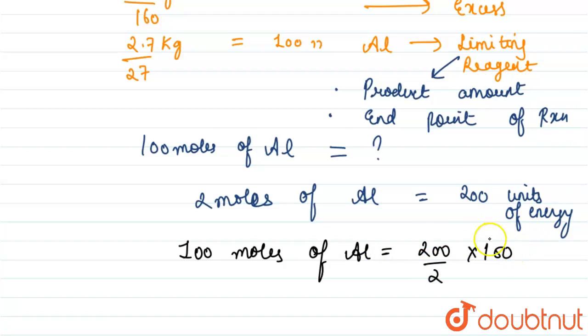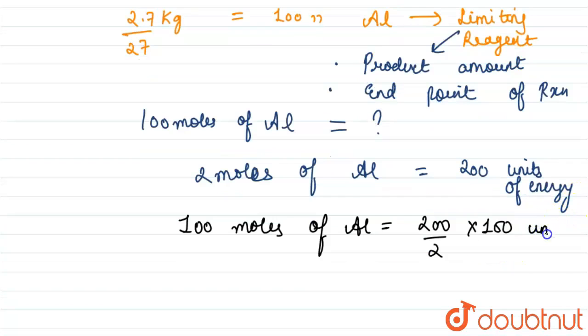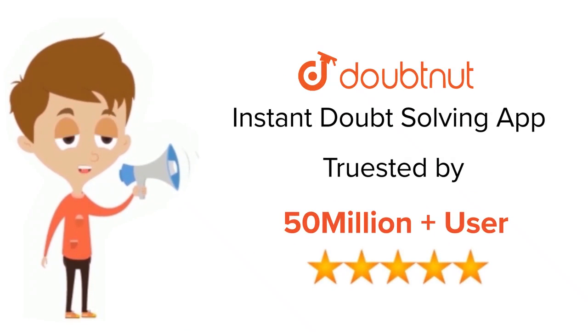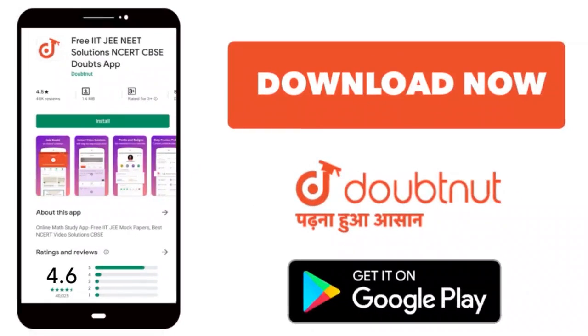So this will come out to be 10,000 units. So our third part answer is 10,000 units. These are our answers for the given question. For class 6 to 12th IIT and NEET level, trusted by more than 5 crore students, download Doubtnut app today.